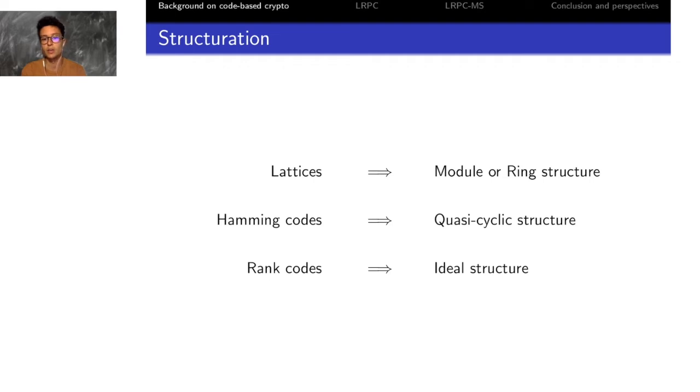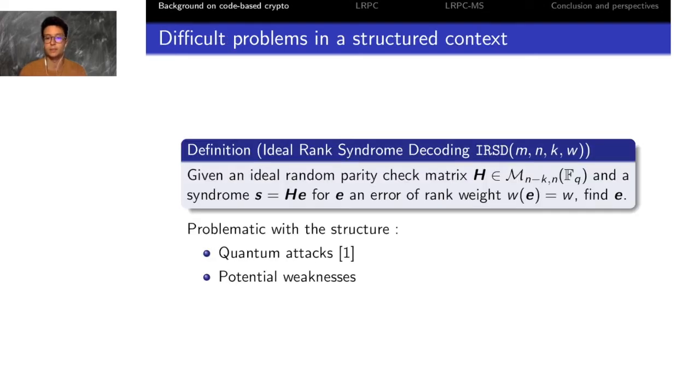For lattice-based cryptography, you add what is called a module or a ring structure. For Hamming metric, it's called the quasi-cyclic structure, and for the rank codes it is called the ideal structure. Most cryptosystems add some structures to their objects in order to improve the efficiency of the parameters.